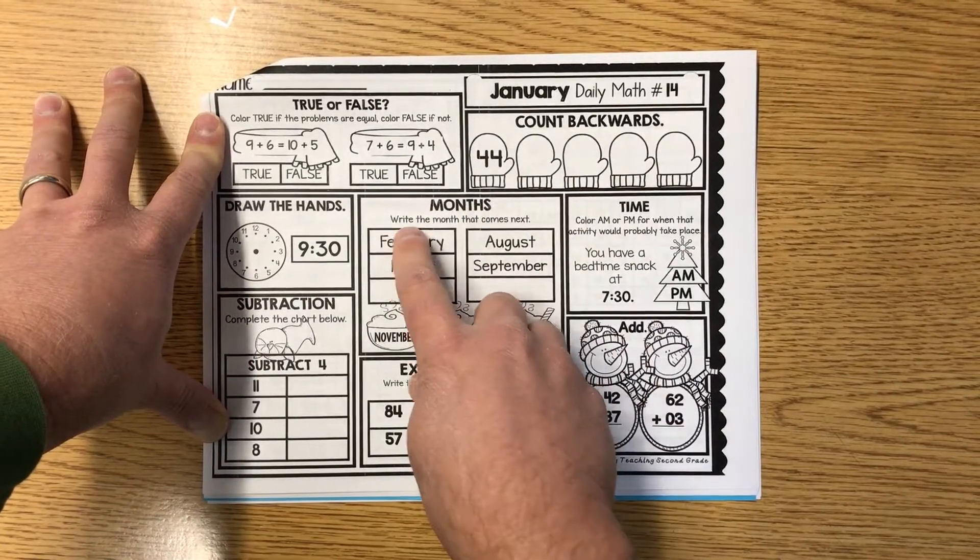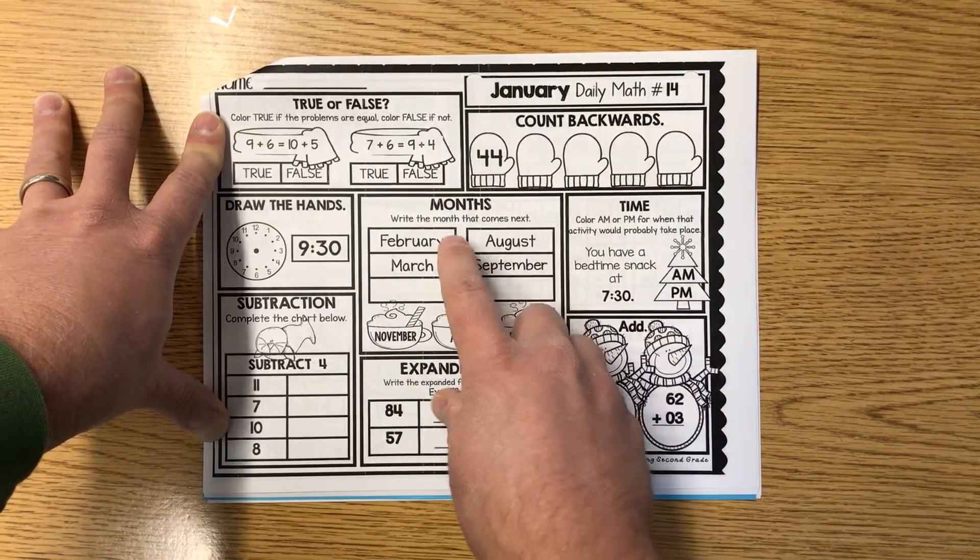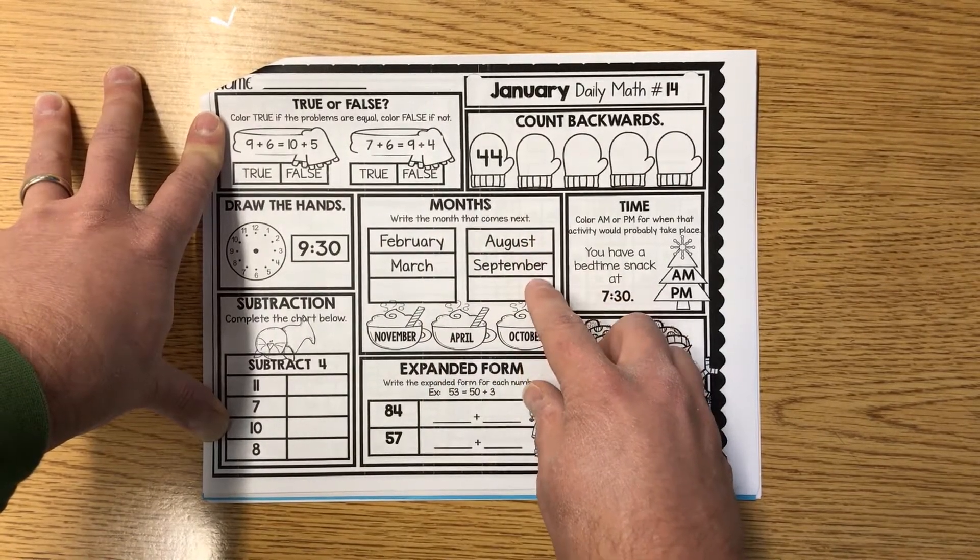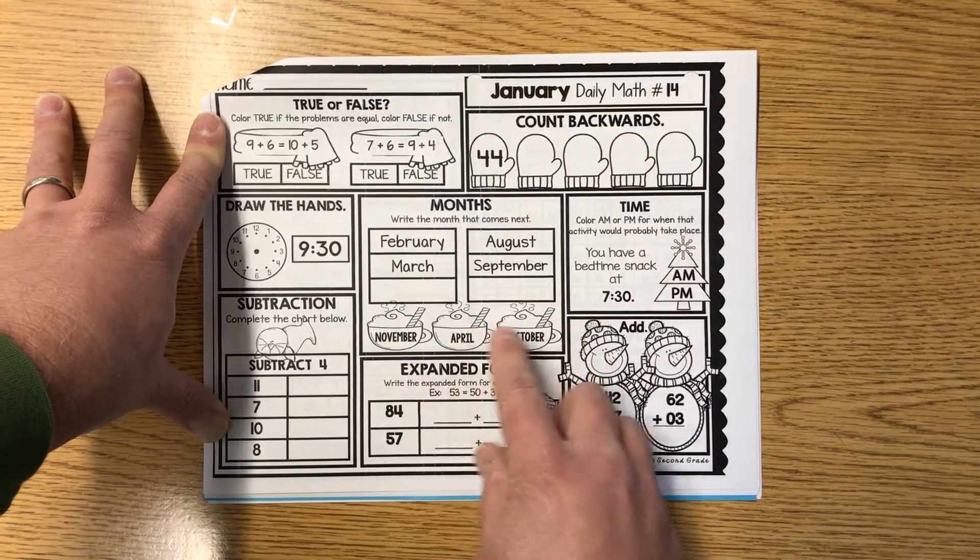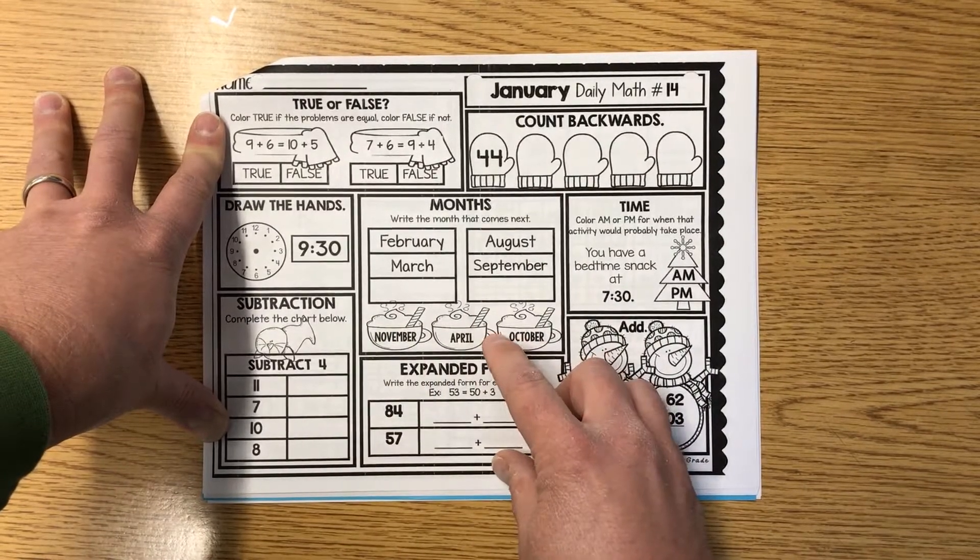Let's go to months. Write the months that come next. February, March blank. August, September blank. Your choices are down here at the bottom, by the way. That's kind of nice to give that to you.